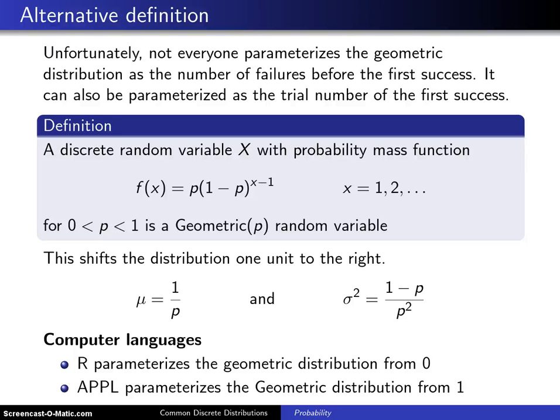Well, here is the dark side of the geometric distribution. It looks so good. We had a closed form cumulative distribution function. The moment generating function was looking good. It had closed form moments. But unfortunately, not everyone parametrizes the geometric distribution as the number of failures before the first success.